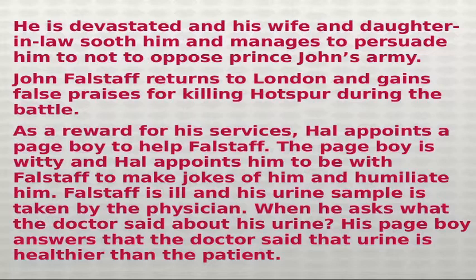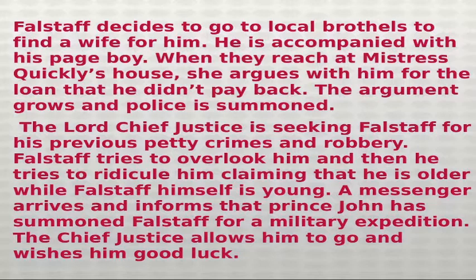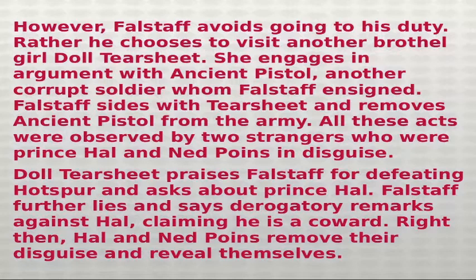Falstaff is ill and his urine sample is taken by a physician. When he asks what the doctor said, his pageboy answers that the doctor said the urine is healthier than the patient. Falstaff decides to visit local brothels to find a wife. When they reach Mistress Quickly's house, she argues with him over an unpaid loan. The argument grows and police are summoned. The Lord Chief Justice is seeking Falstaff for previous petty crimes and robbery. Falstaff tries to deflect him by ridiculing him, claiming he is old while Falstaff himself is young. A messenger arrives informing that Prince John has summoned Falstaff for a military expedition, and the Chief Justice allows him to go. However, Falstaff avoids his duty and instead chooses to visit another brothel girl, Doll Tearsheet.